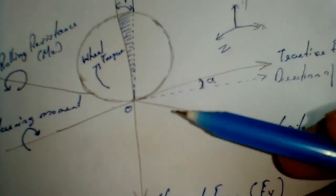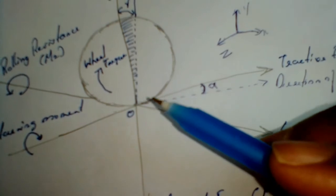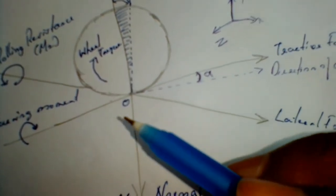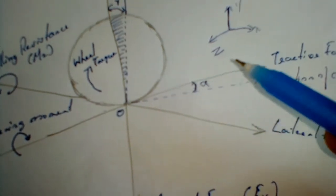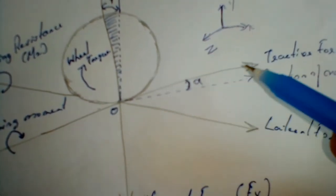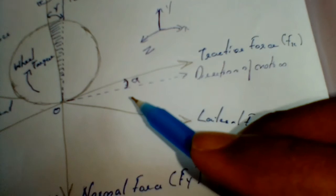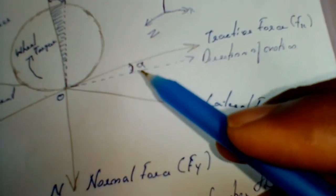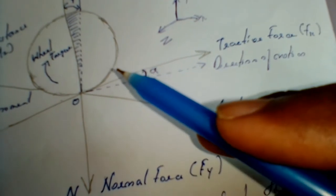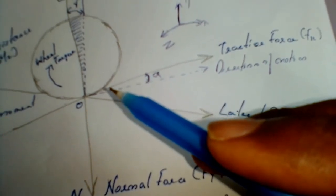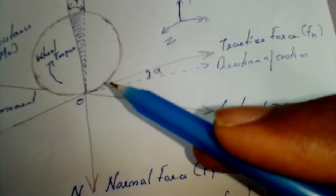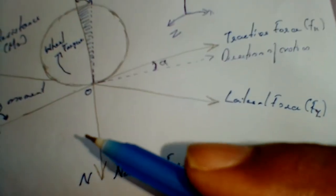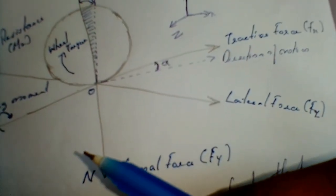Whenever there is a lateral force, there will be a slip angle, because the wheel will tend to rotate in another plane or axis rather than following the line of action of the tractive force. So the direction of motion of the tire will deviate. If you need to know more, check my video about cornering stiffness and cornering force. Hope you enjoyed my video and learned something new — don't forget to subscribe. Thank you!